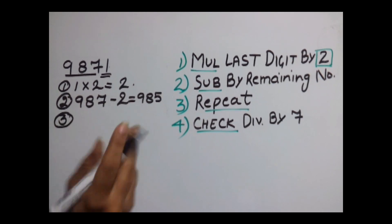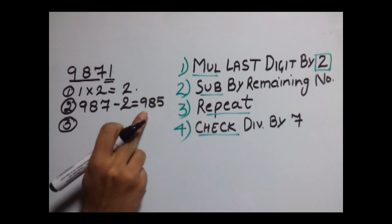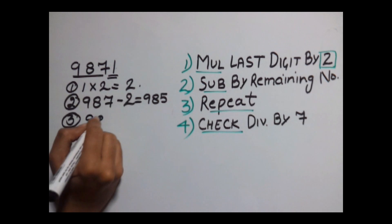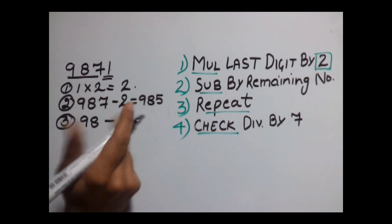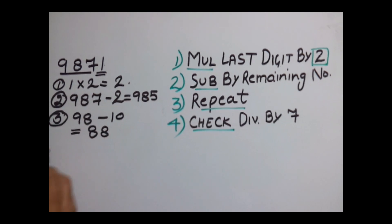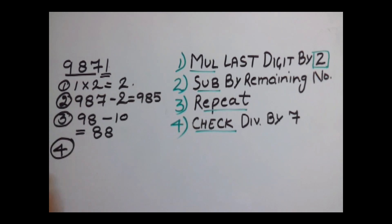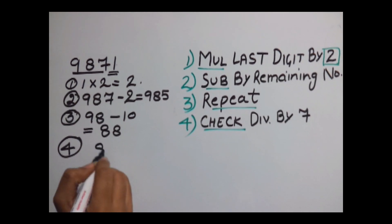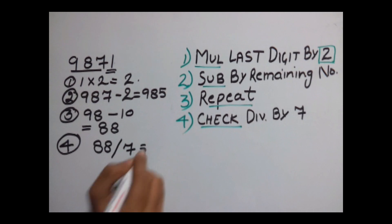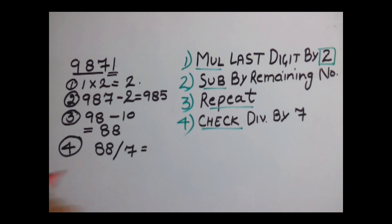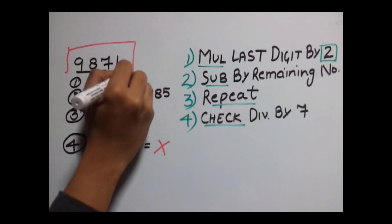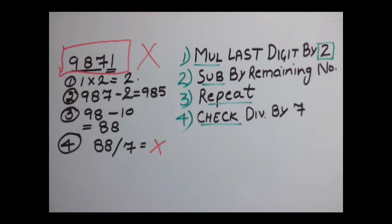Our third step is to repeat this process till we get a 2-digit number. So repeating this gives us 98 minus 5 into 2 is 10, which gives us 88 as our answer. Our fourth step would be to check whether 88 is divisible by 7 or not. Is 88 divisible by 7? No. So this number is also not divisible by 7.